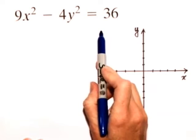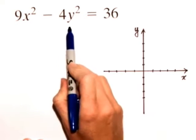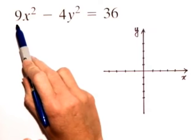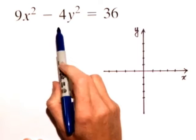First, we need to determine what type of conic section it is. We'll notice that the x squared and y squared are both on the same side of the equation, and the x squared has a positive coefficient and the y squared has a negative coefficient, so this indicates that it's a hyperbola.